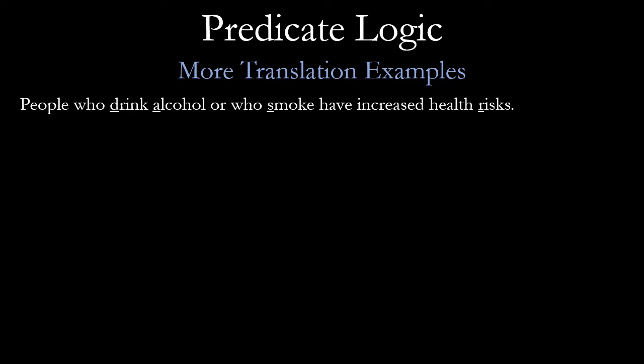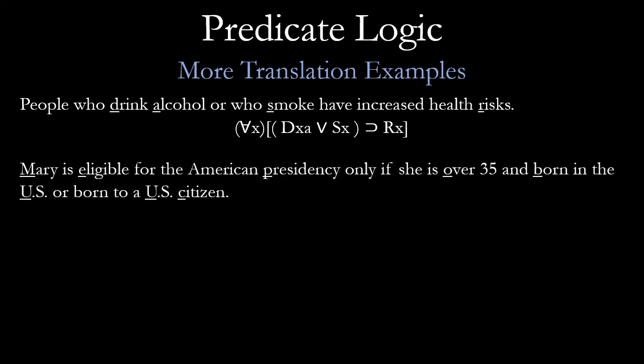'People who drink alcohol or who smoke have increased health risks.' Notice we've got a universal statement with an 'or' operator. That can be expressed as: for all X, if DXA or SX, then RX — where DXA means 'X drinks alcohol A,' SX means 'X smokes,' and RX means 'X has increased health risks.' This could be improved by adding PX to specify that X refers to people, but to keep it simple: everything that drinks alcohol or smokes has increased health risks.